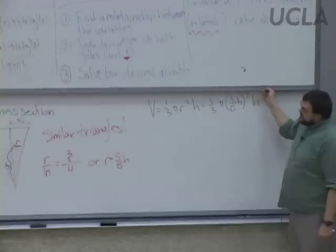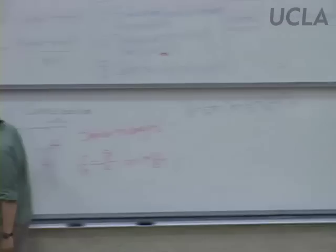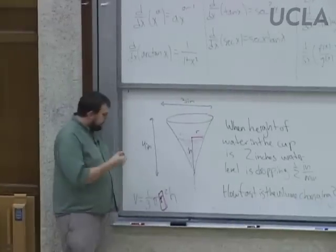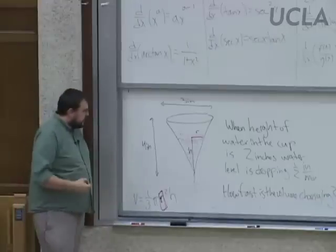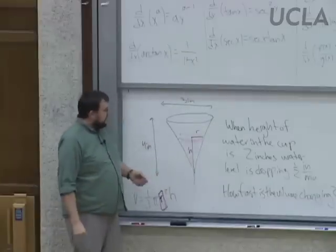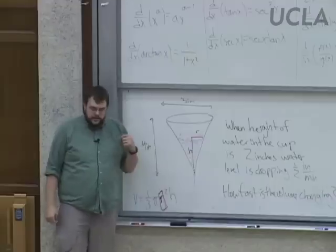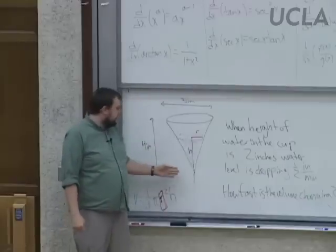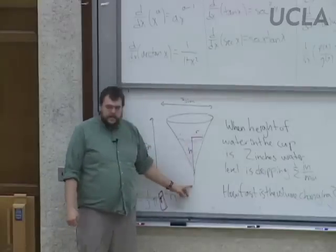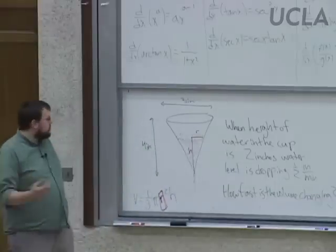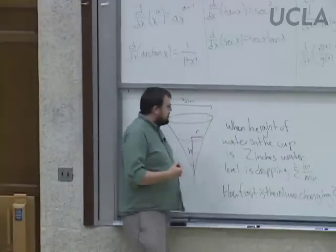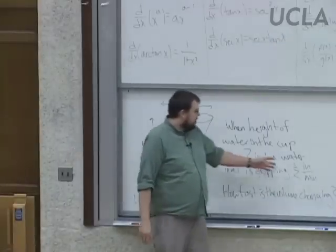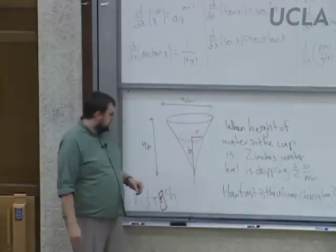We're finishing up Chapter 3 and didn't finish the problem last time, so let's recap. We had a cup — like the paper cone cups next to water coolers — four inches high, three inches across at the top. You fill it with water, but there's a manufacturing defect: a hole. The water is leaking out the bottom, so the volume is changing. When the height of the water is two inches, the rate that the water is dropping is a half inch per minute. How fast is the volume changing?